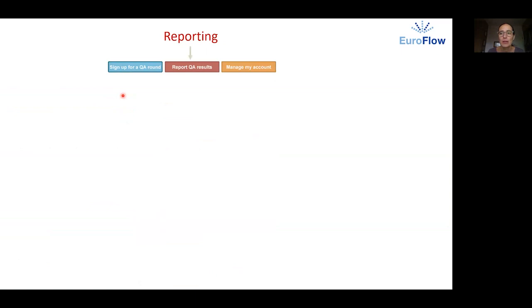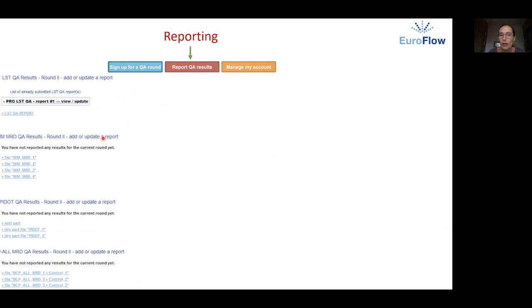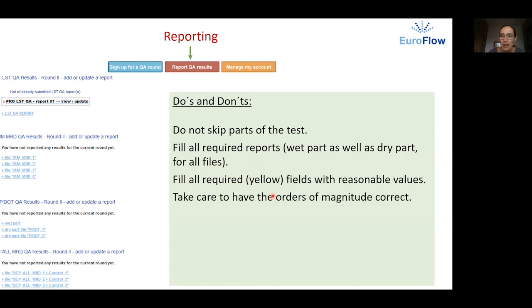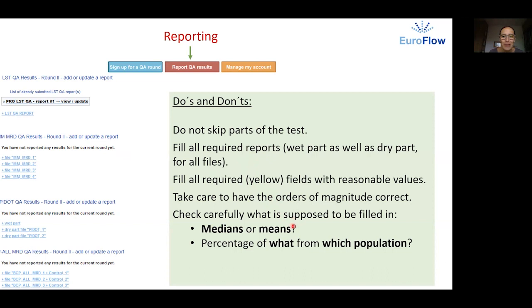To report your results you select the report QA results link and you will get to this page. So here are some do's and don'ts. Do not skip parts of the test. Fill all required reports wet part as well as dry part and for all files. Fill all required yellow marked fields with reasonable values. Take care to have the orders of magnitude correct. Check carefully what is supposed to be filled in for example medians or means percentage of what from which population. After the report is filled you can print it and check it. If anything is wrong don't panic you can update it.